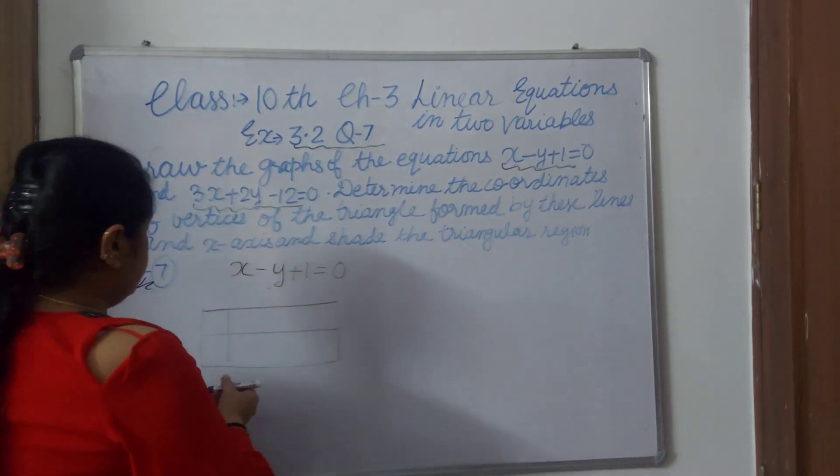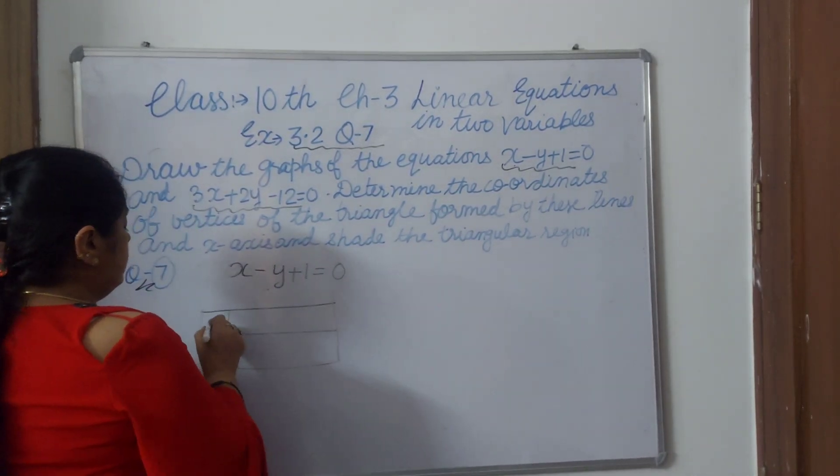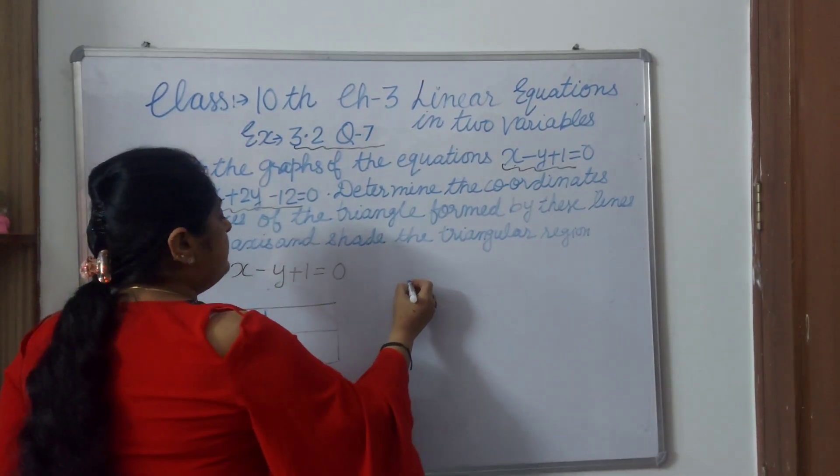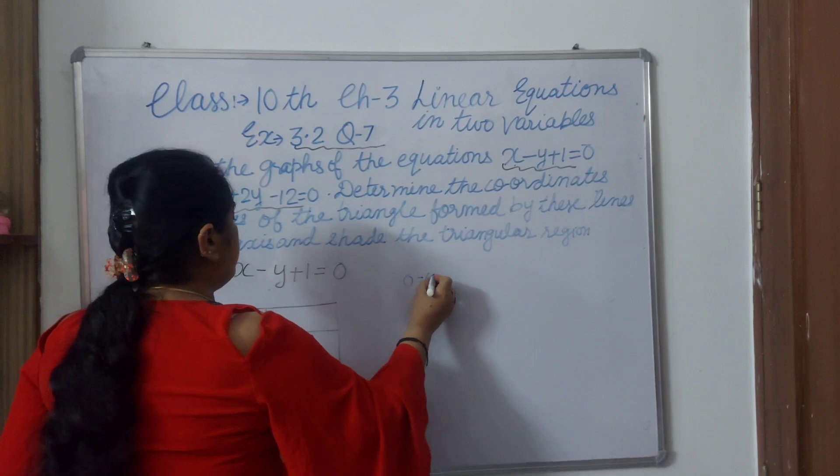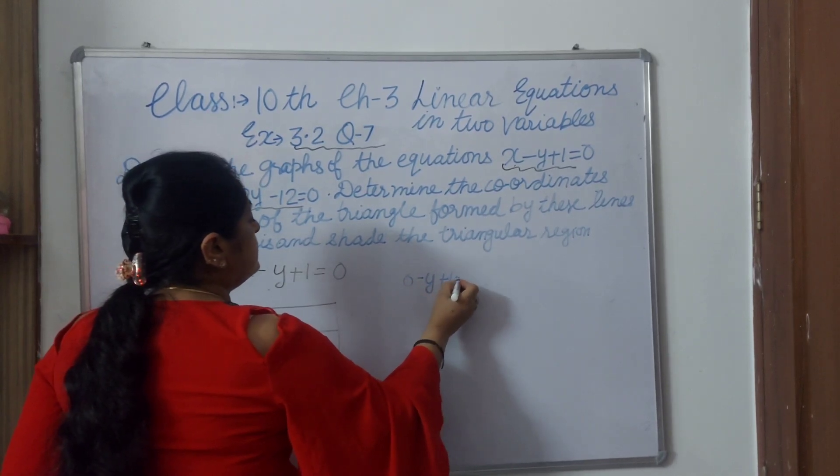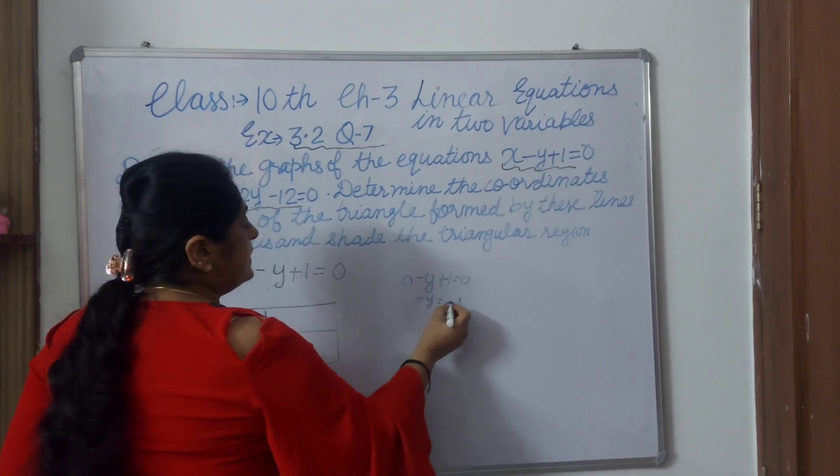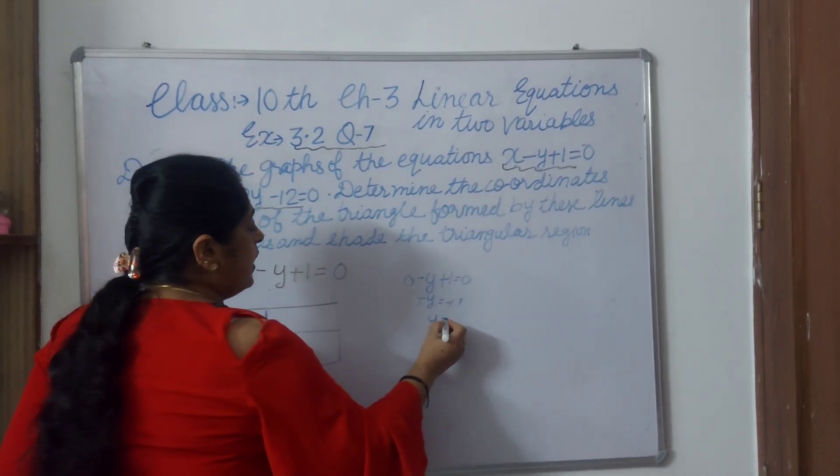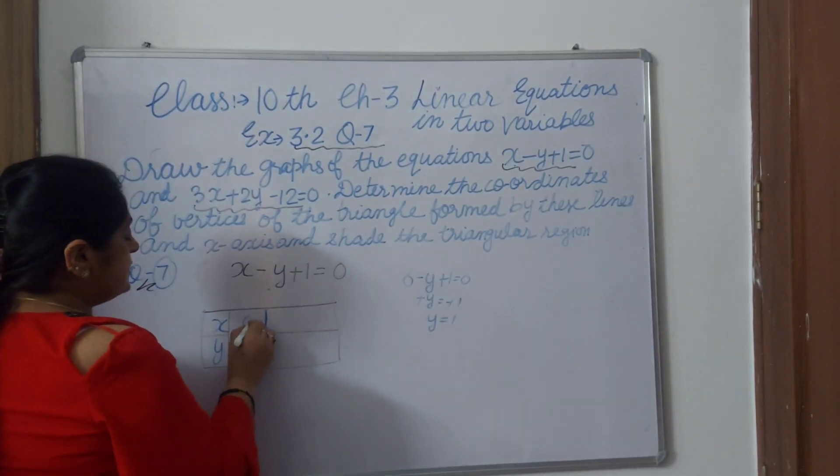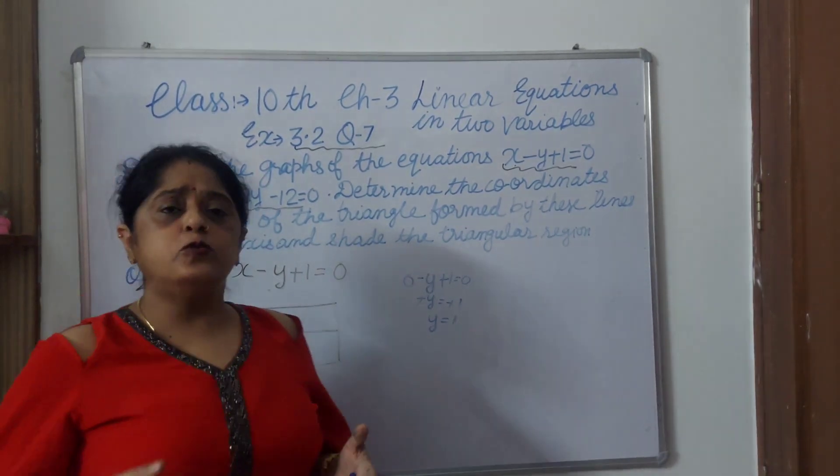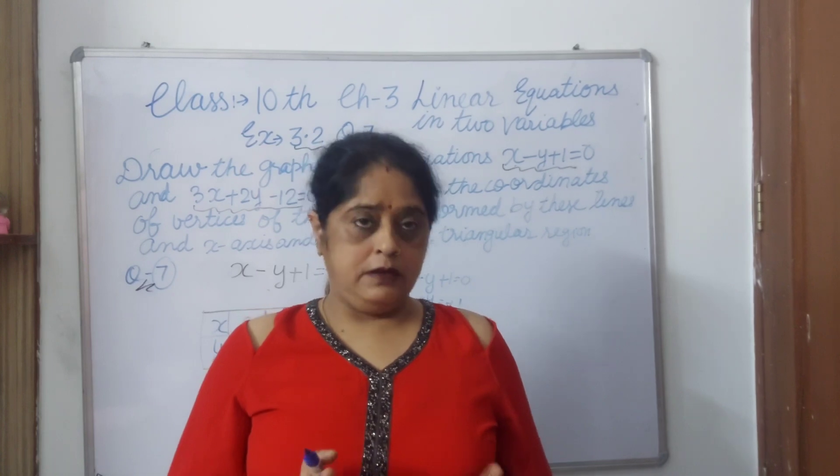Take x value as 0. Here x and here y. I am taking x as 0, so 0 minus y plus 1 equals 0. Minus y equals minus 1. Minus and minus will cancel. Y equals 1. If x is 0, y is 1. Take x as 2 or 3, any number you can take.